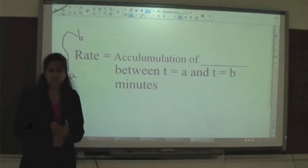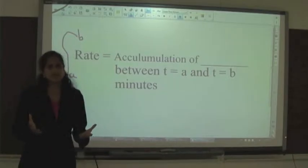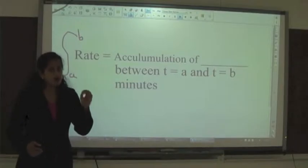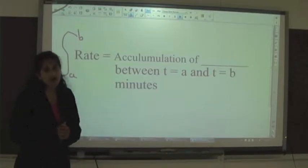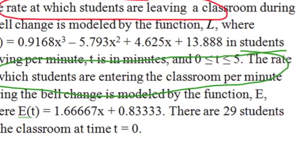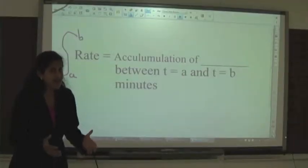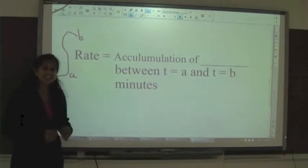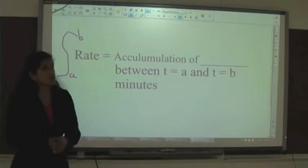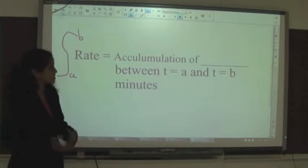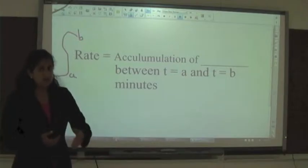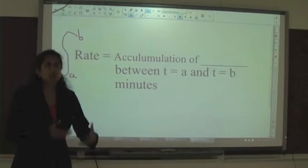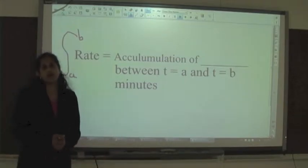One strategy I tell my students is to make a prediction about the problems before you even get to the questions. One thing we always talk about is probably the anti-derivative. It just gave you two rate equations, so it's probably going to ask you an amount. We know that the anti-derivative of a rate gives us an accumulation or an amount — if it was people per minute, it's going to be the accumulation of people.